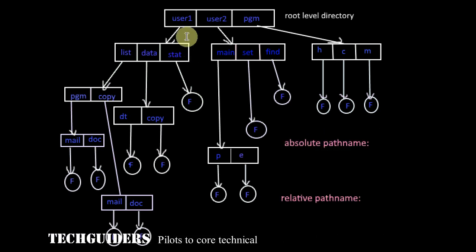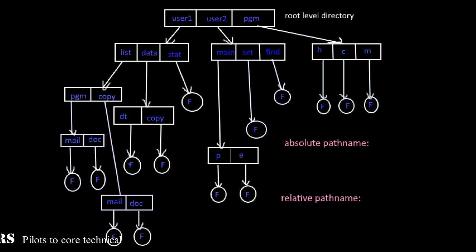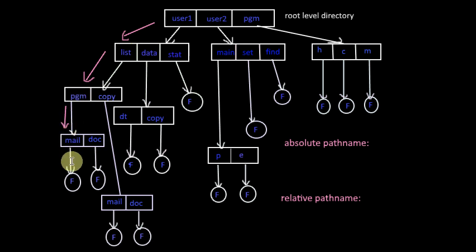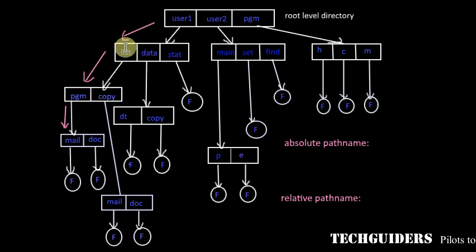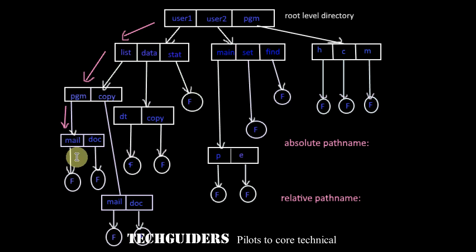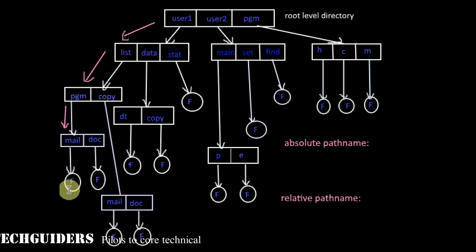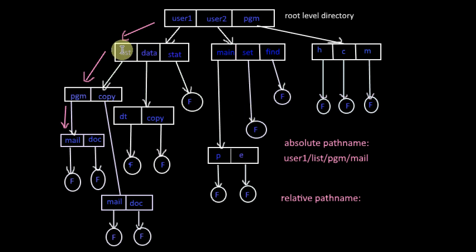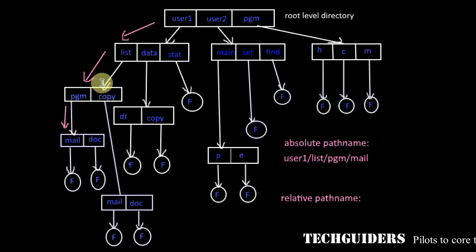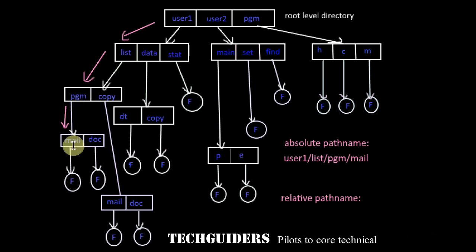The absolute path name starts from the root and follows a path through all the subdirectories to the file. For example, the absolute path name for the file 'mail' is user1/list/program/mail. If the user is currently in the directory user1/list, then the relative path name for the same file is program/mail.